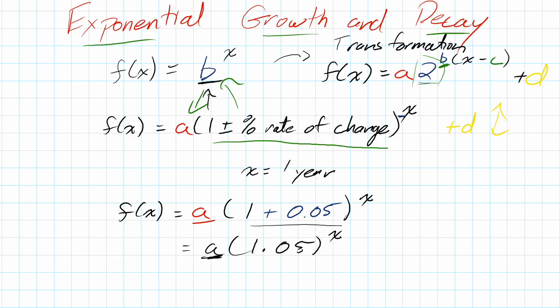And if I had $100 to start, my a value would actually be 100. That's my starting value in this. So 100 times 1.05 to the power of x. This gives me my function, which I can now make a graph of what this would look like.